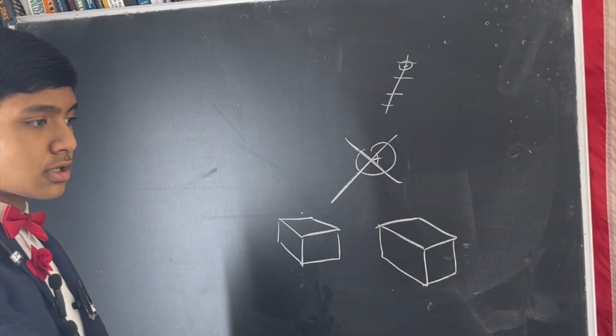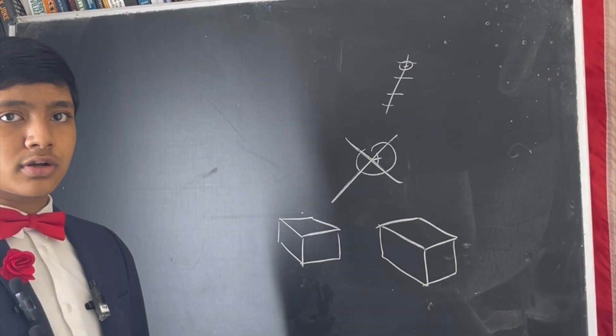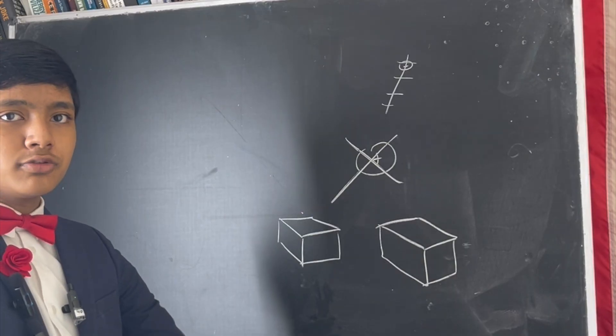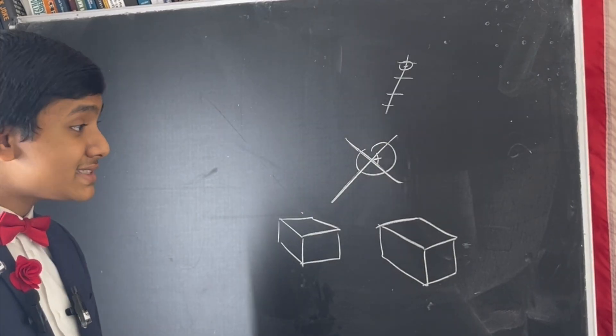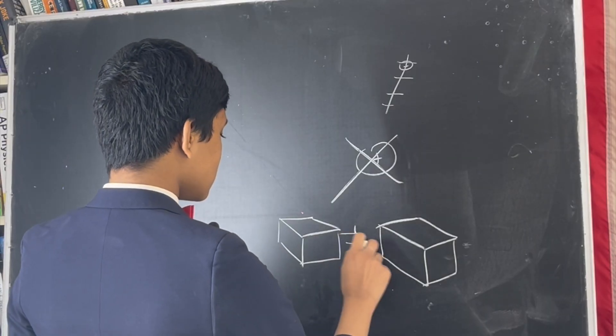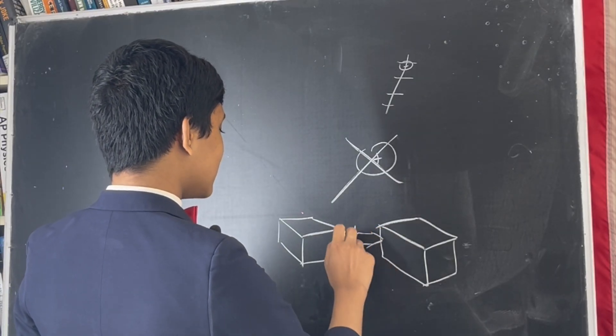Or these particles of dust are on cube one, and these particles of dust are on cube two. Or cube one is over here, and cube two is over there. They are always distinguishable in lots of ways. So these two guys will never be the same.